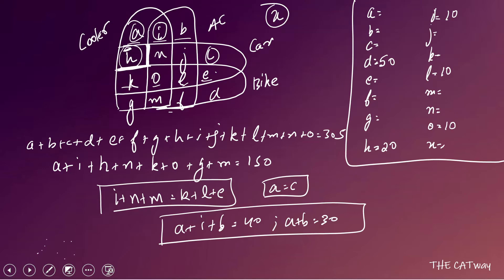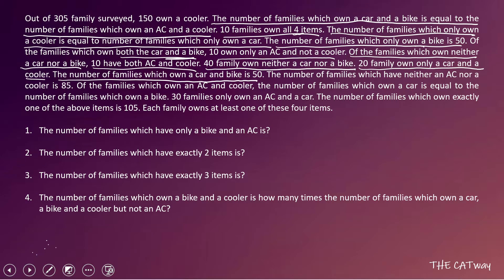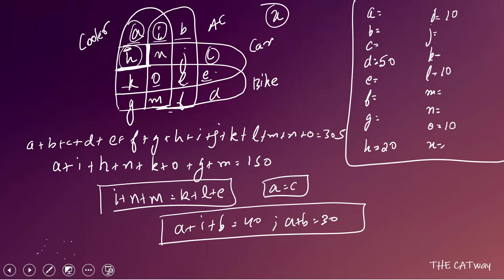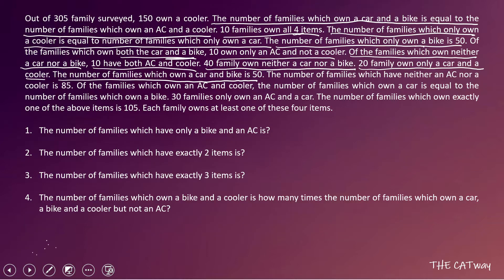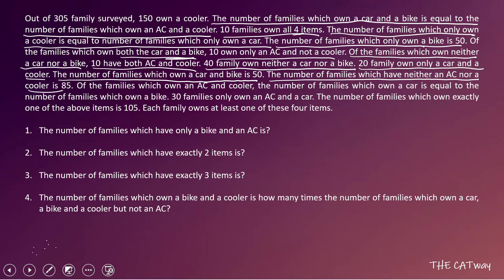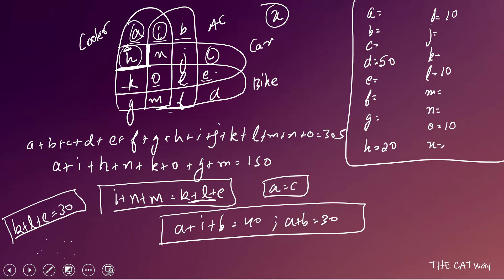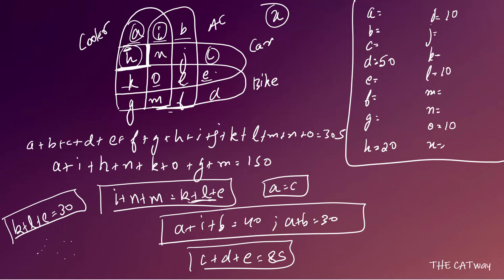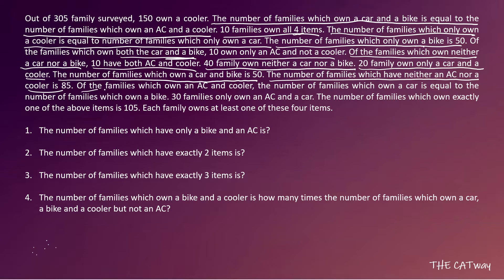The number of families which own a car and a bike is 50, so K + L + E + O = 50. With O = 10, we get K + L + E = 40. The number of families which have neither AC nor a cooler is 85, so C + D + E = 85.